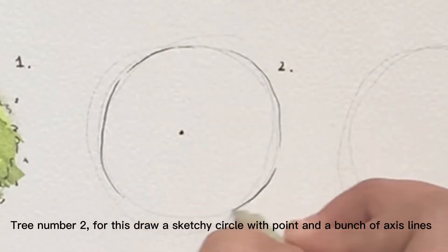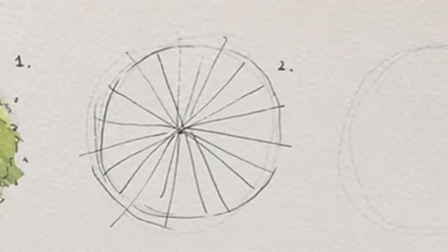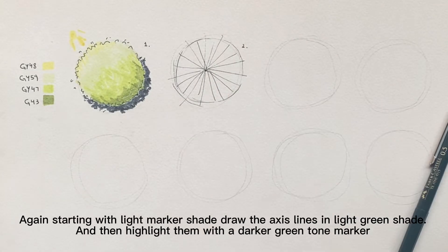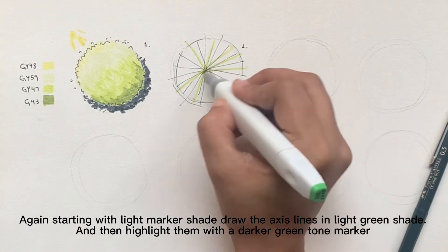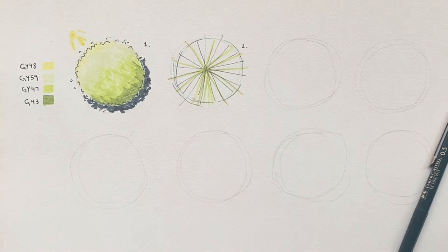Tree number two. For this draw a sketchy circle with a point and a bunch of axis lines. Again starting with light marker shade, draw the axis lines in light green shade and then highlight them with a darker green tone marker.